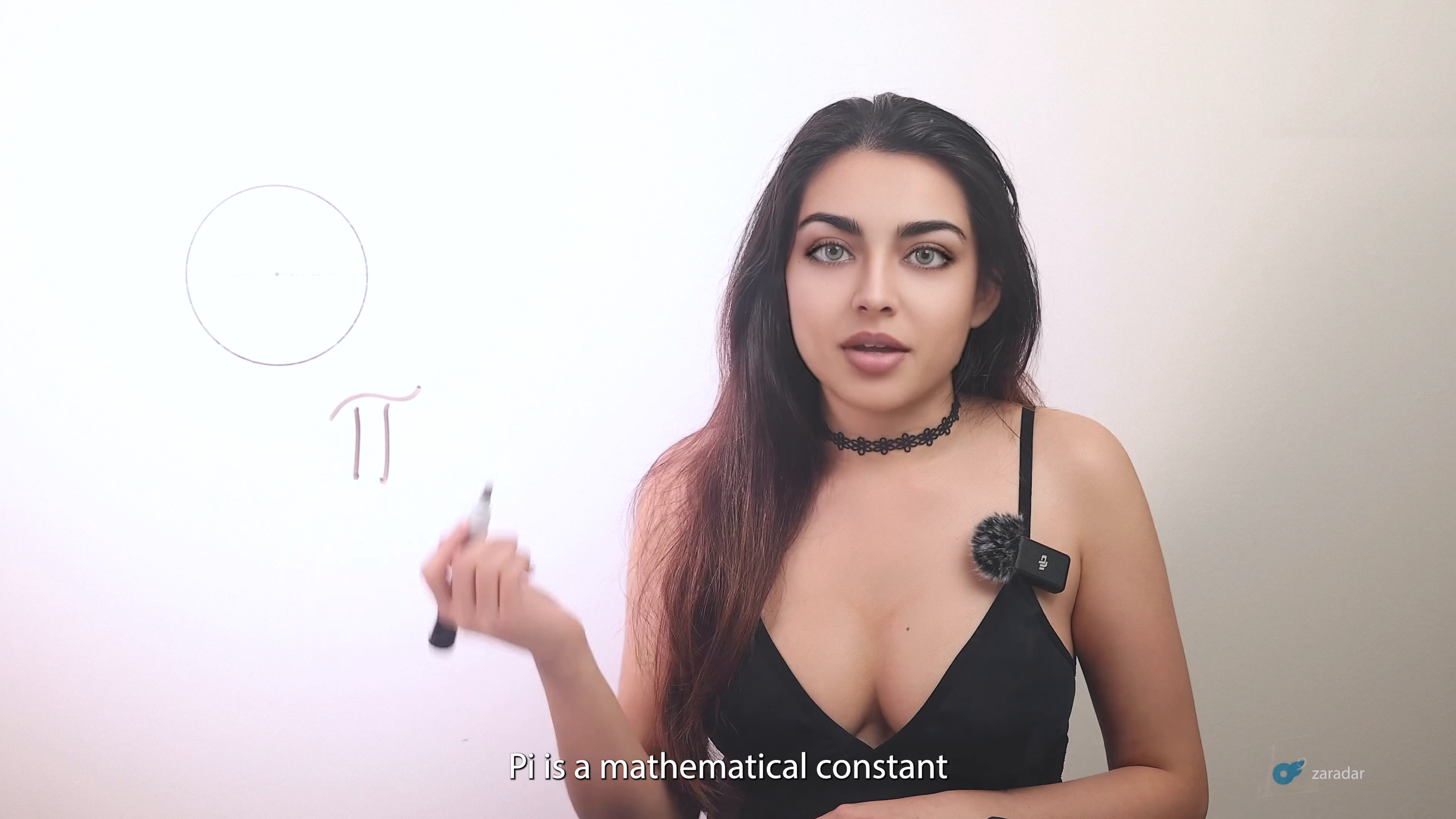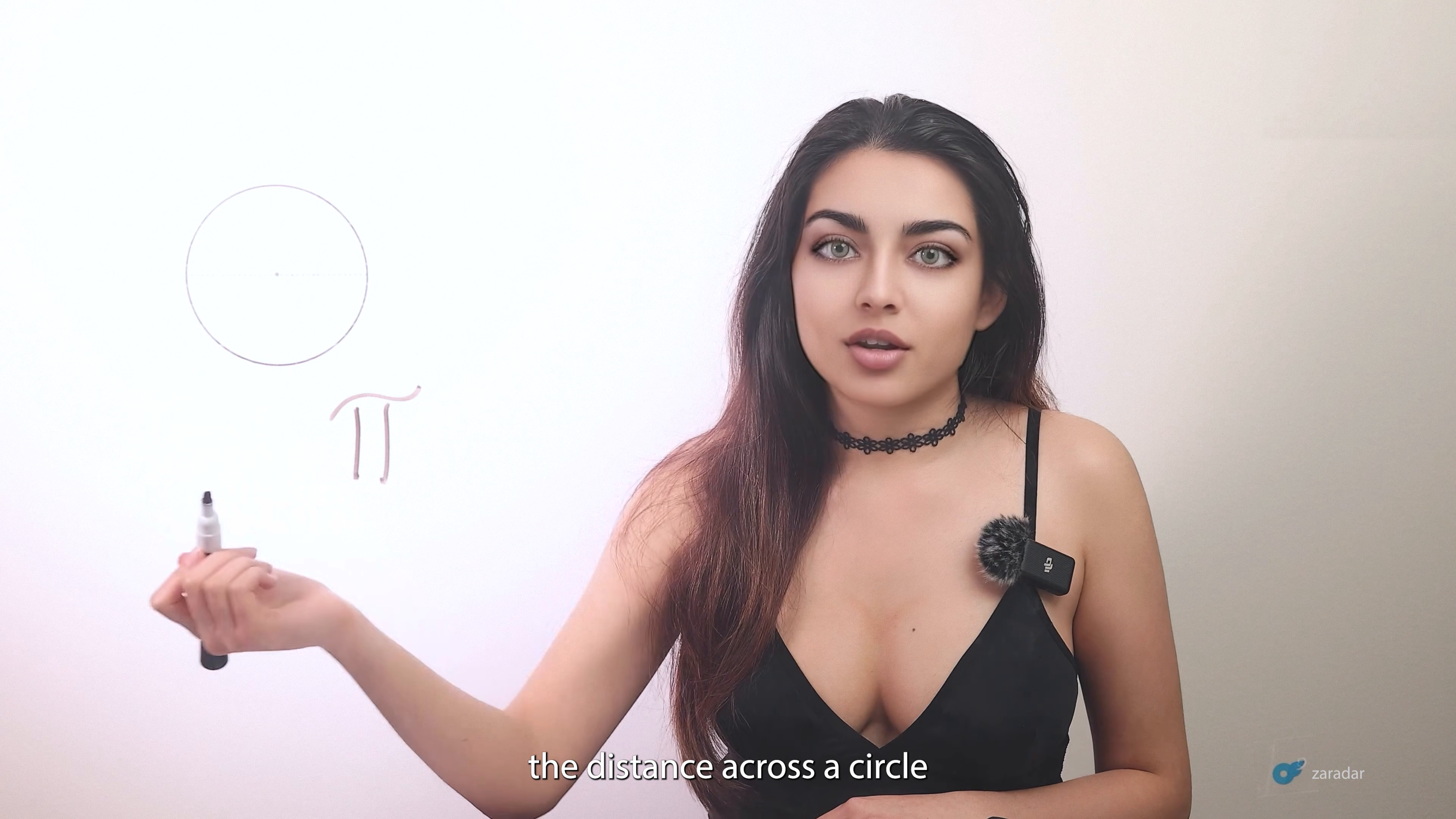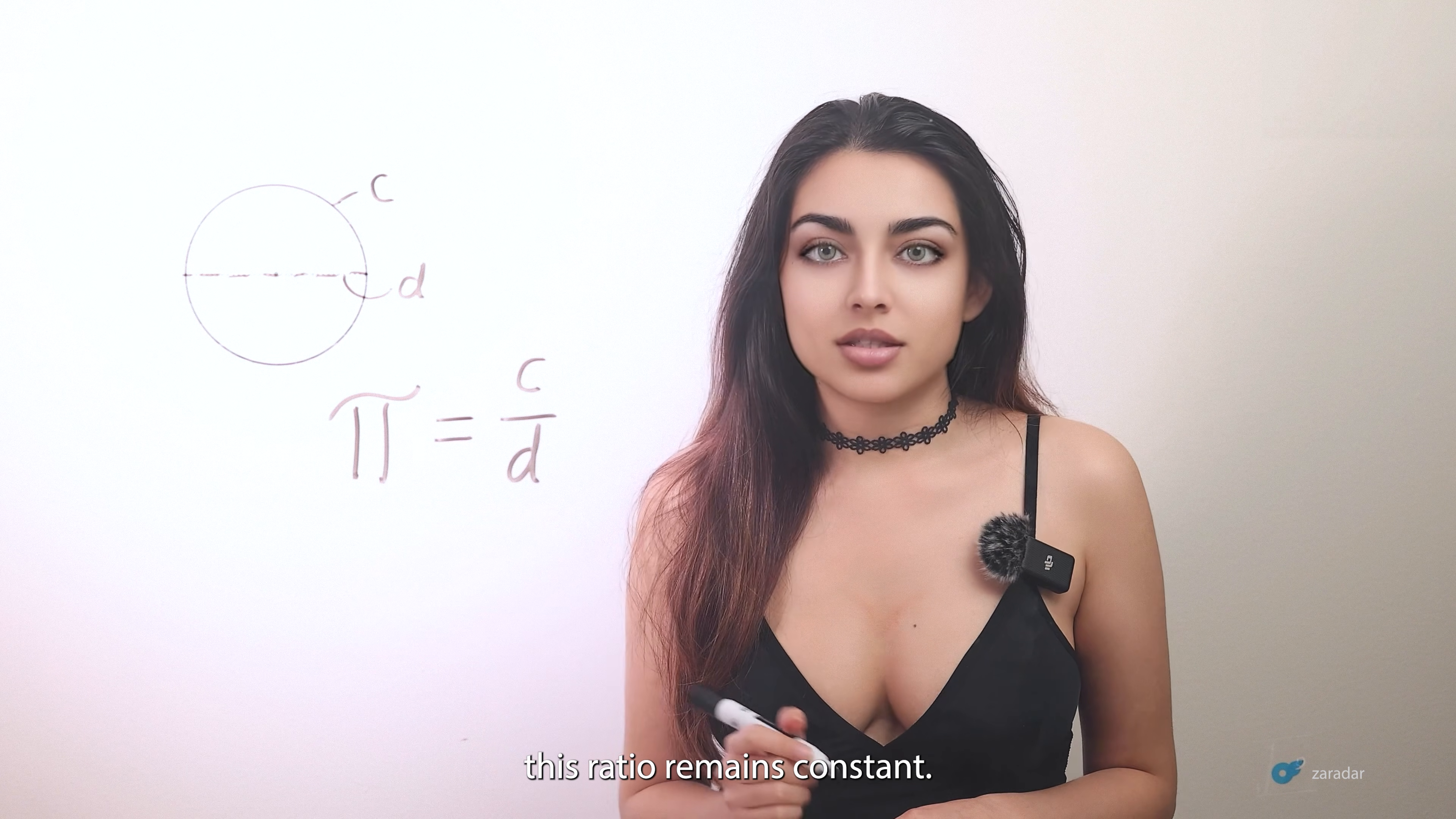Pi is a mathematical constant that represents the ratio of the circumference, the distance around the edge of a circle, to its diameter, the distance across a circle through its center. No matter the size of the circle, this ratio remains constant.